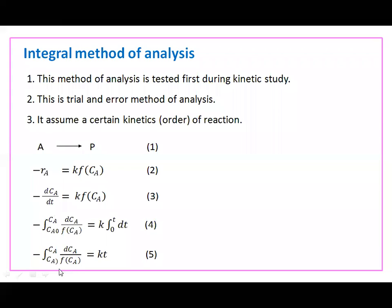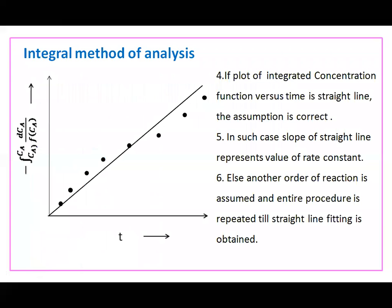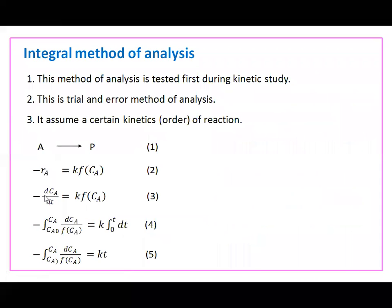This equation is integrated. The integration of dt gives t, and upper limit minus lower limit gives K·t. So this is the equation obtained after integration. Once we integrate, a plot is made. The LHS — this entire integrated concentration function term — is like y = mx, where y represents the LHS term, x means t (time), and m, the slope, means K.